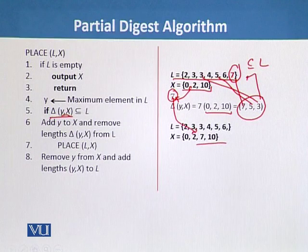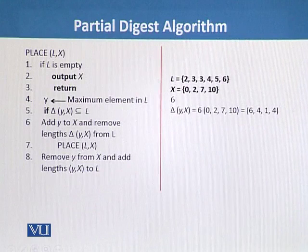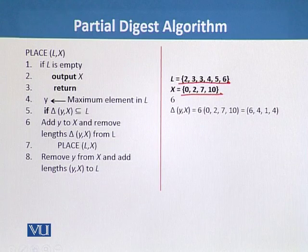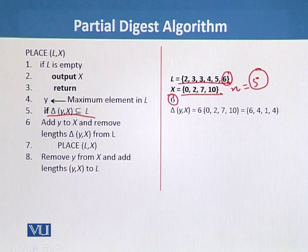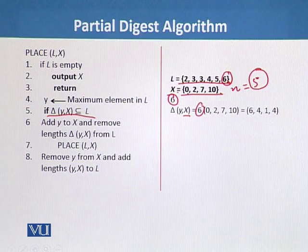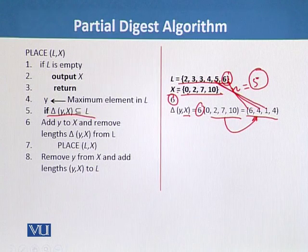We continue and the value of L is now {2, 3, 3, 4, 5, 6} and X is {0, 2, 7, 10}. We need to calculate up to n = 5 restriction sites. The highest element remaining in L is 6. We put Y = 6 and calculate delta(Y, X) with X = {0, 2, 7, 10}: after calculation we get {6, 4, 1, 4}. Checking: 6 is present, 4 is present, but 1 is not in L — so this is not a subset of L.